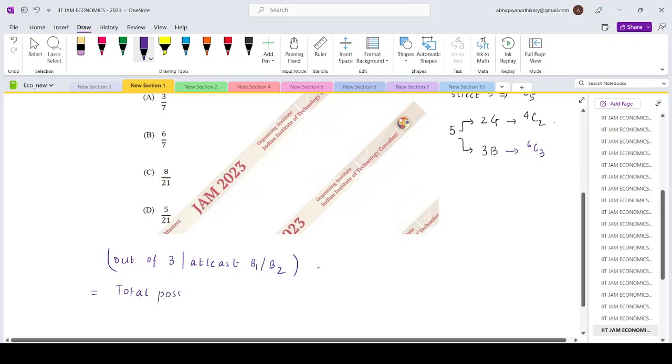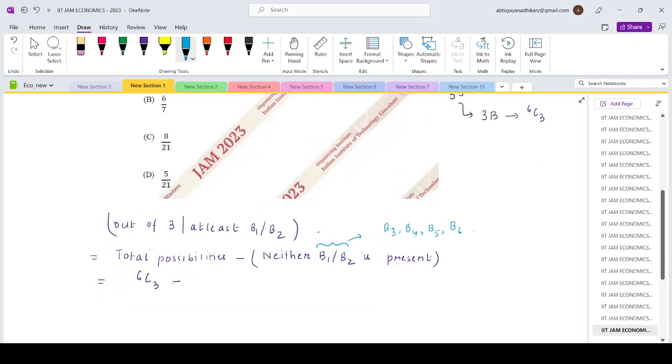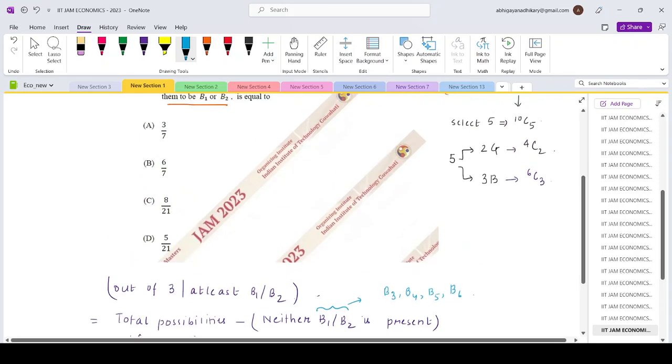The total possibility is 6C3. There are 6 boys you need to select 3, so that is 6C3. When neither B1 or B2 is present, essentially you will select 3 of them out of B3, B4, B5, B6. So there are 4 options out of which you need to select 3, so that can be done in 4C3 ways. The 3 boys will be selected in 6C3 minus 4C3 ways.